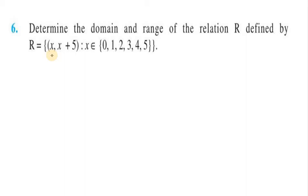Hello everyone. Let's start with another question. Question number 6 of exercise 2.2. It says determine the range and domain of the relation R defined by R = {(x, x+5) : x ∈ {0, 1, 2, 3, 4, 5}}.